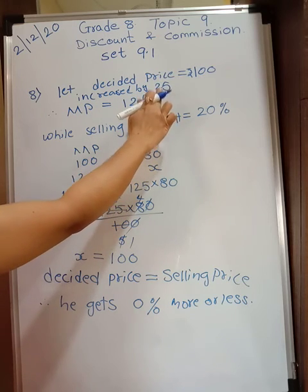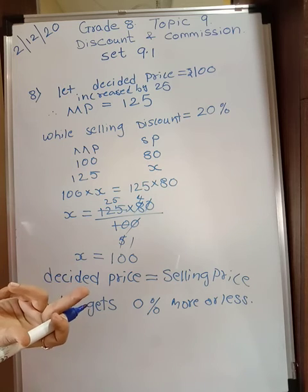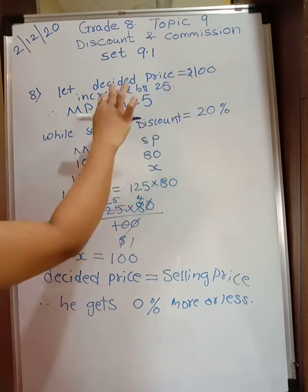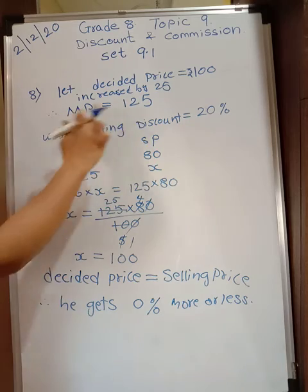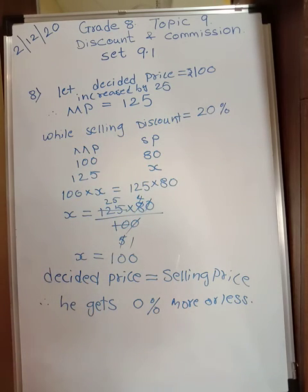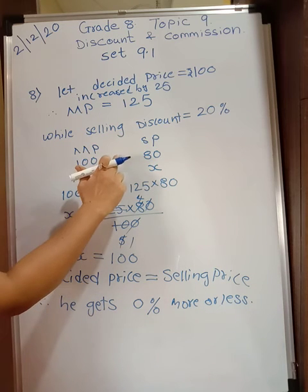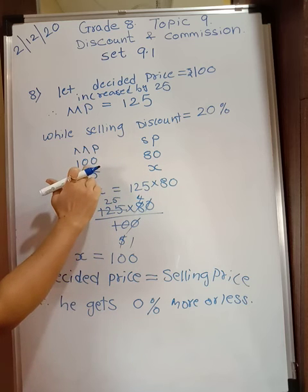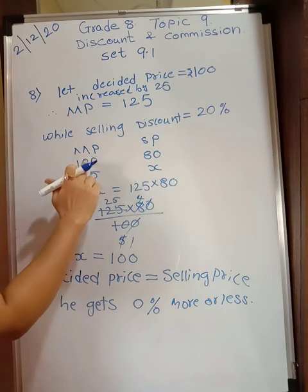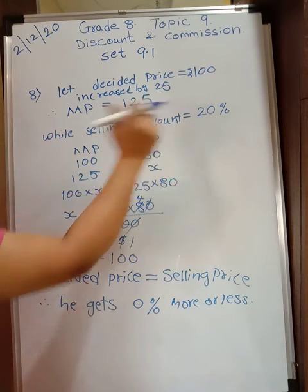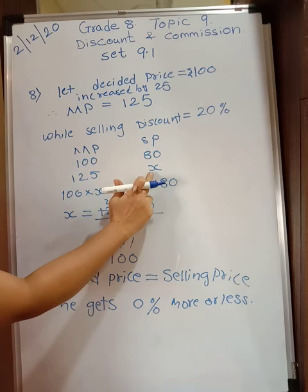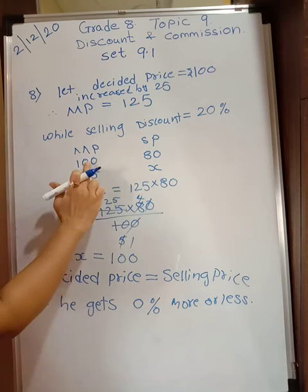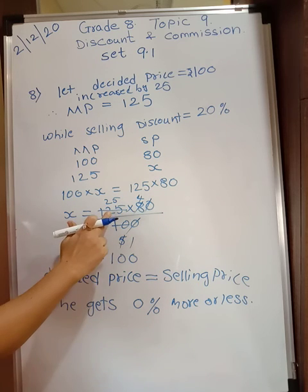The decided price is 100 rupees and he increased it by 25 rupees, so marked price becomes 125. While selling, he offers 20 percent discount. For 100 rupees, 20 rupees is reduced, giving selling price of 80 rupees — that is 20 percent discount. So if marked price is 100, selling price is 80. But now marked price is 125, so find selling price by cross multiplying: 100 into x equals 125 into 80.